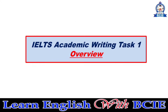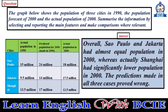Overall, Sao Paulo and Jakarta had almost equal population in 2000, whereas Shanghai had significantly lower population in 2000. The predictions made in all three cases proved wrong.